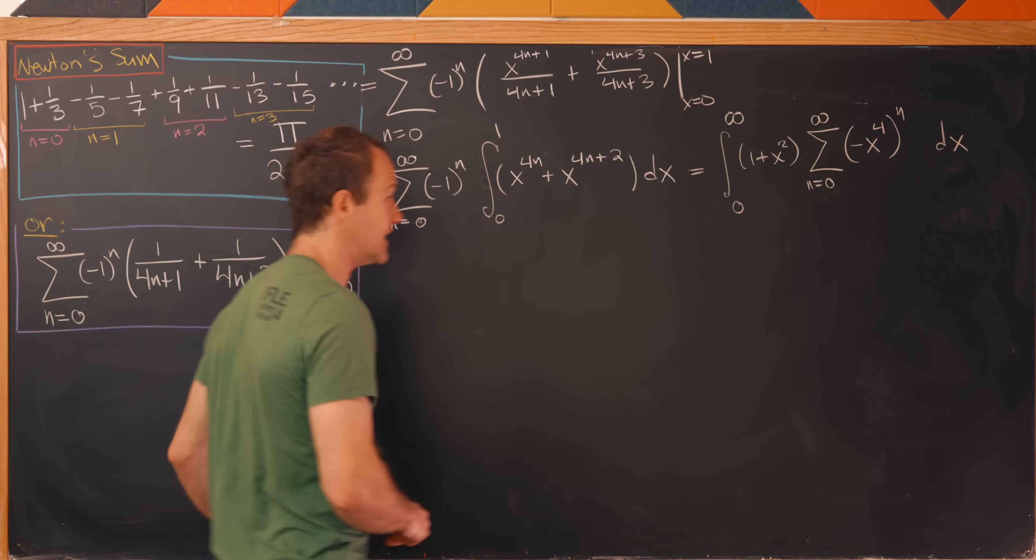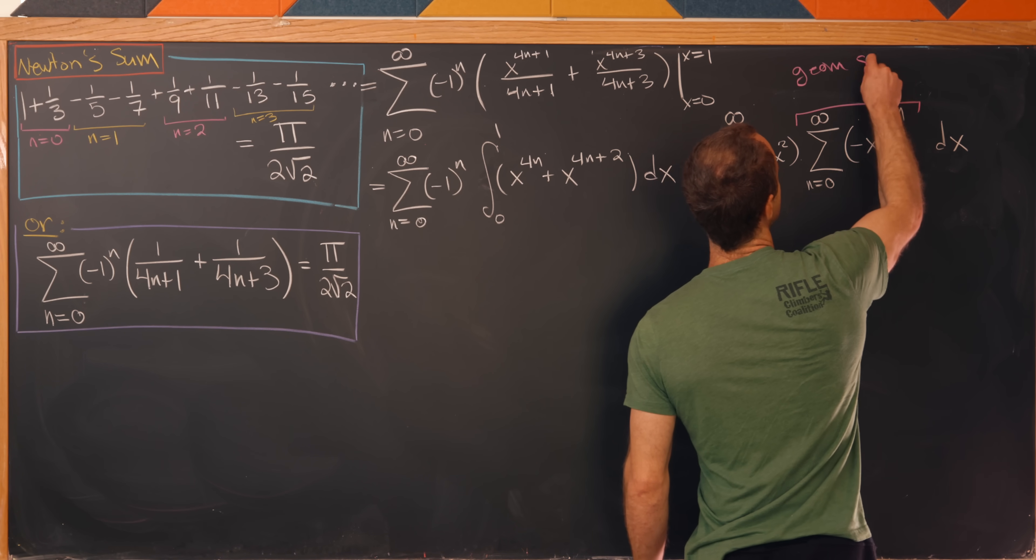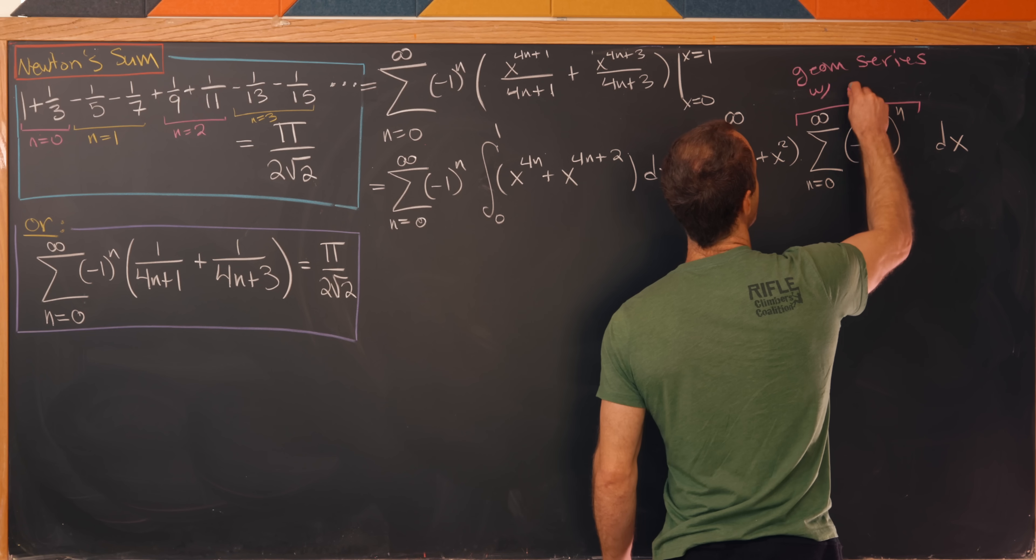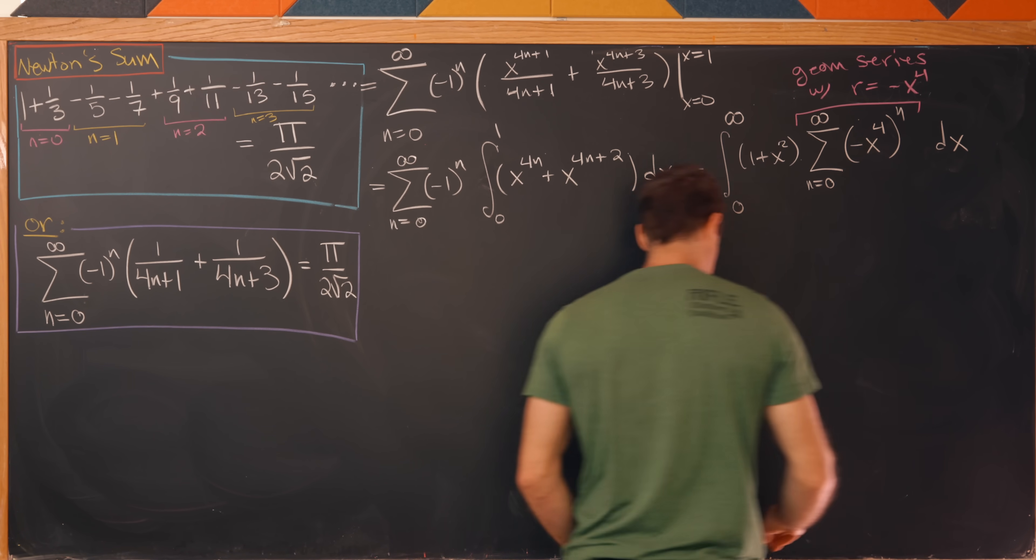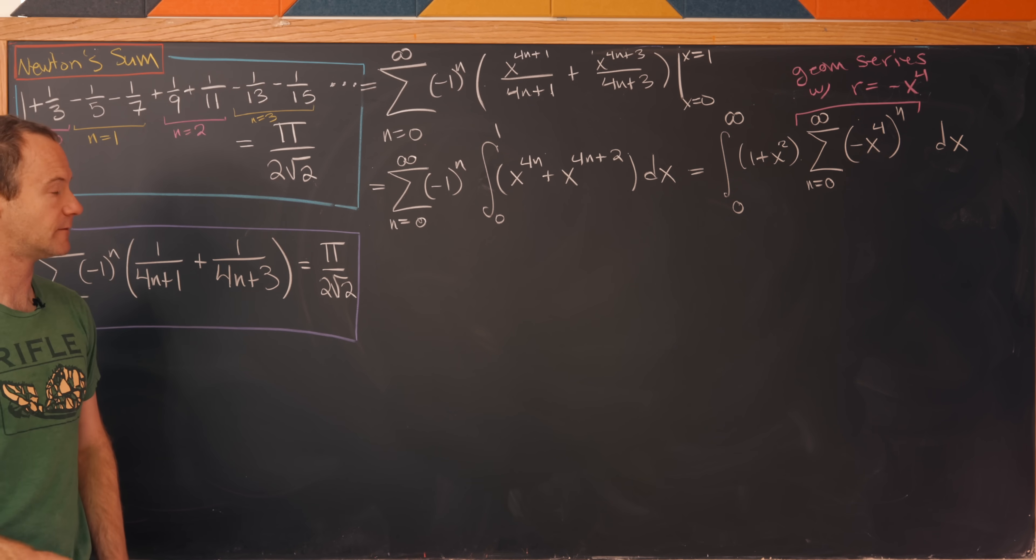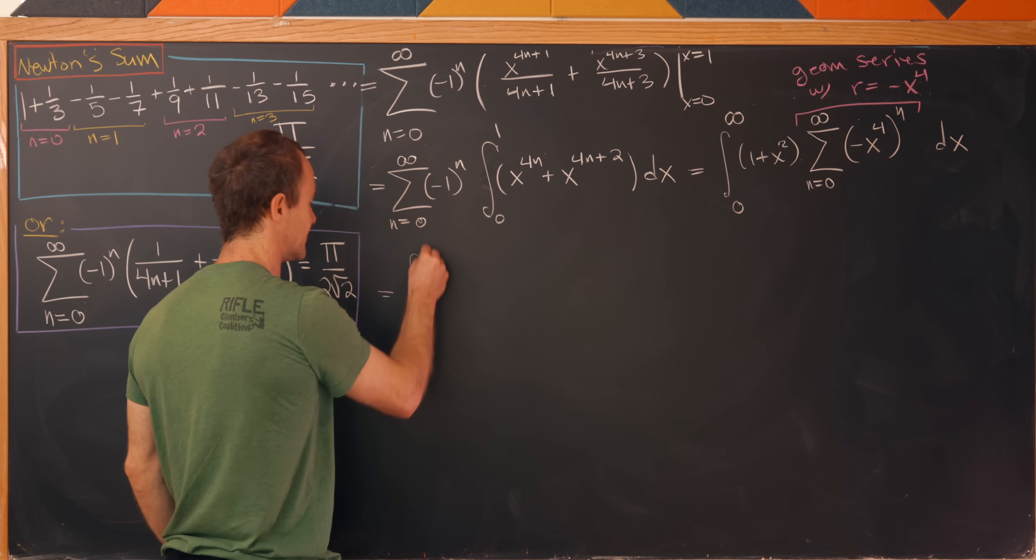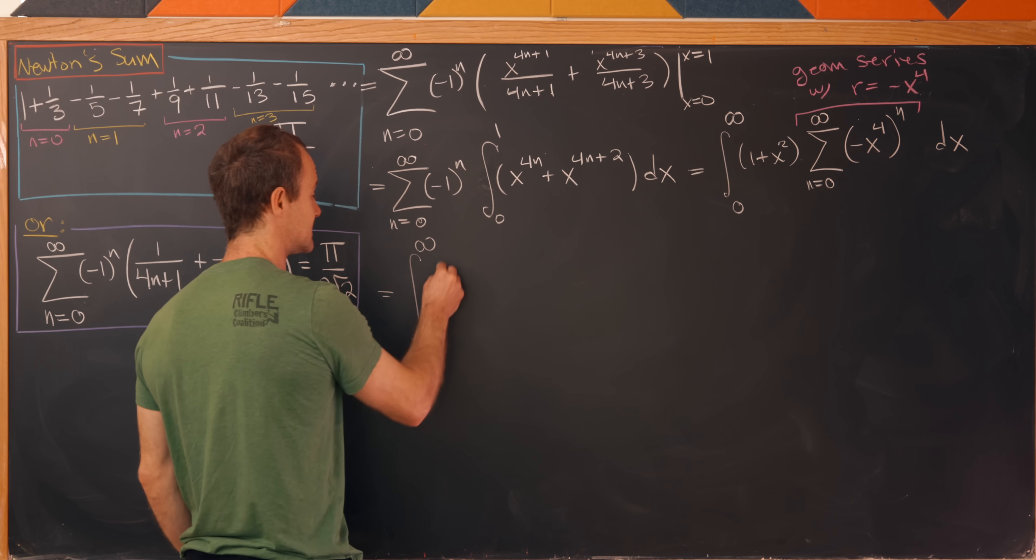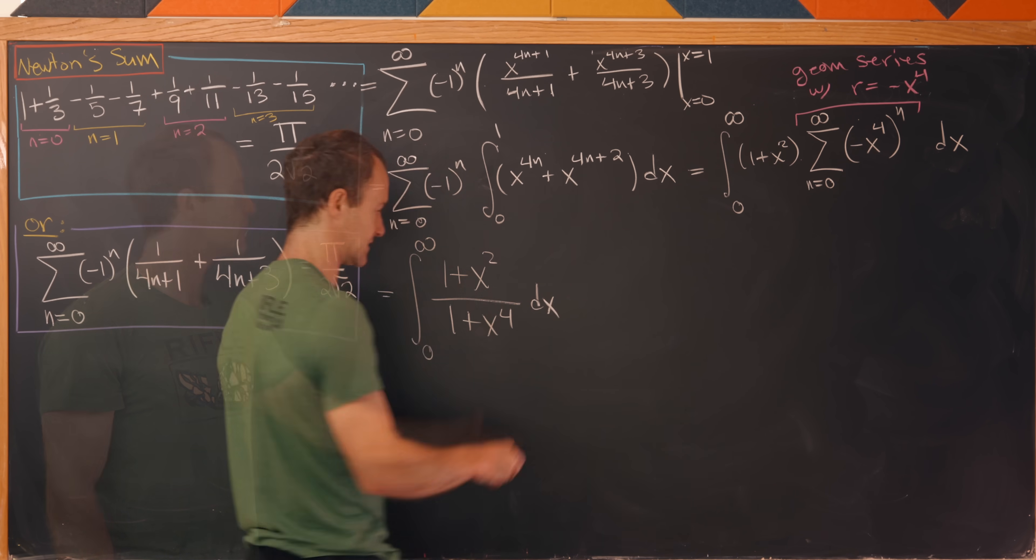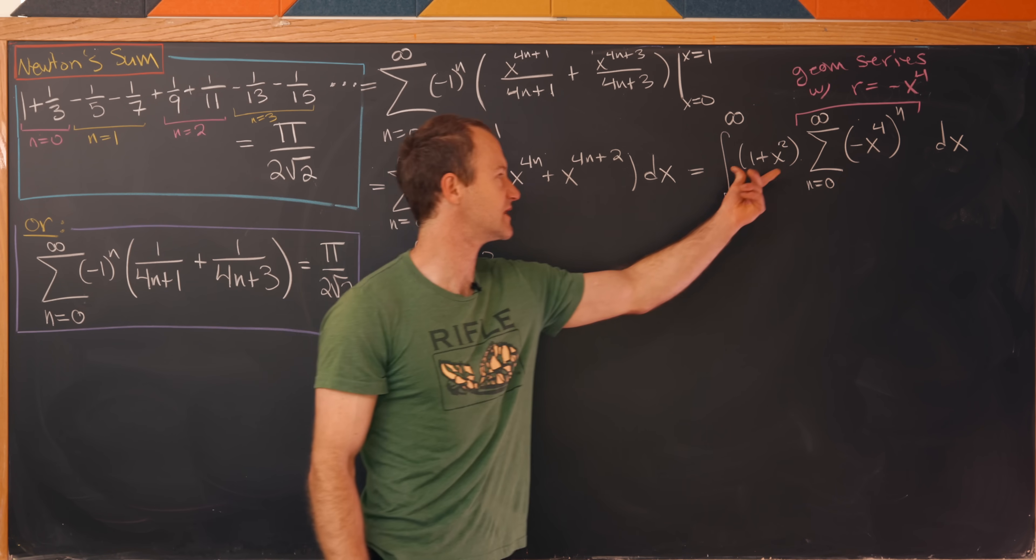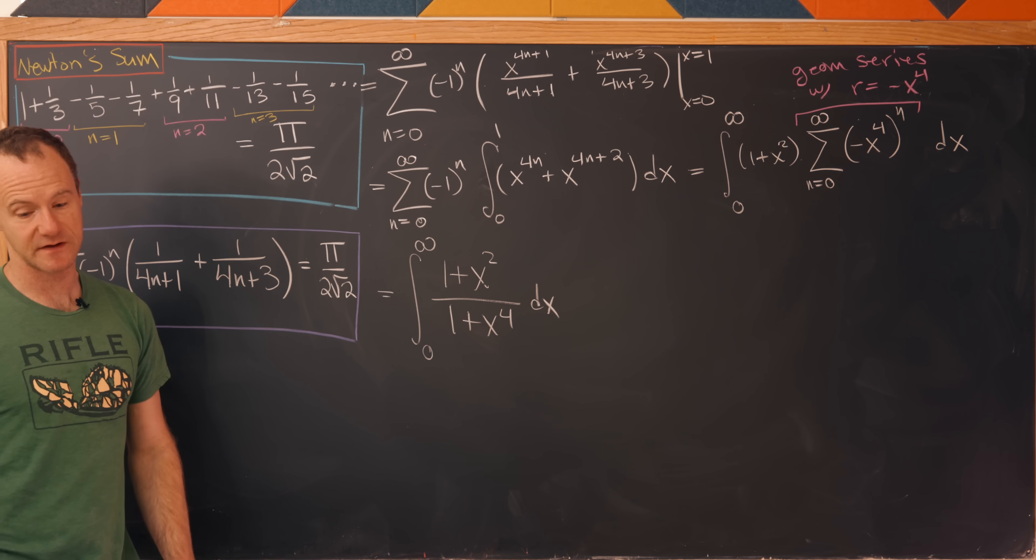But now check it out, this is exactly a geometric series. This is a geometric series with a common ratio of -x^4 and the starting term is 1 as well. So that allows me to rewrite this using the standard formula for geometric series summation as 1 over (1 + x^2) over (1 + x^4) dx, because I have my starting term, which is really just this multiplier, over 1 minus the common ratio.